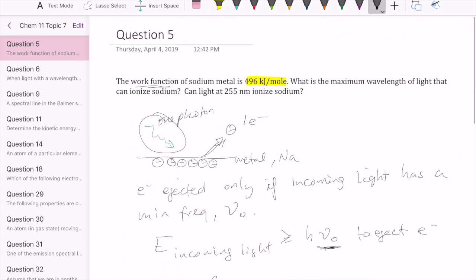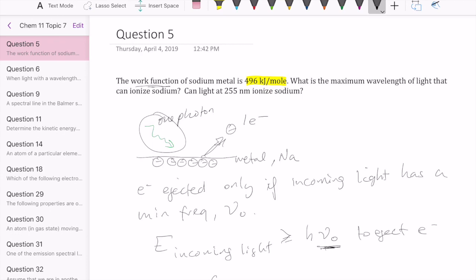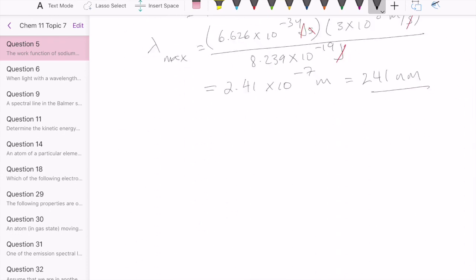The second part of this question says, can light at 255 nanometer ionize sodium? And the answer is no, because the maximum lambda that we just calculated is 241. So anything greater than that will not ionize the electron. So 255 nanometer is greater than lambda max of 241. So it won't ionize the electron.